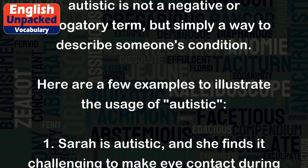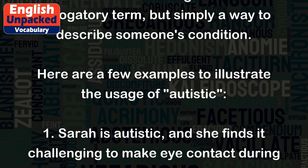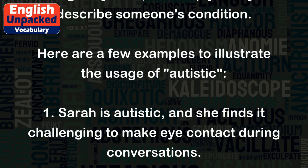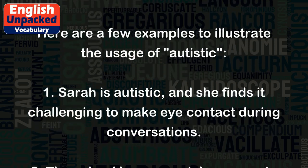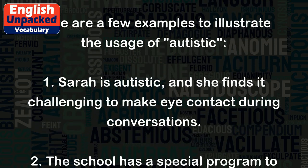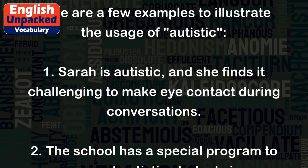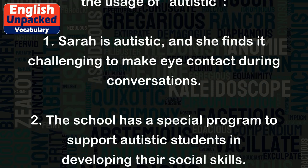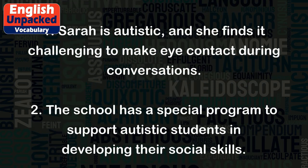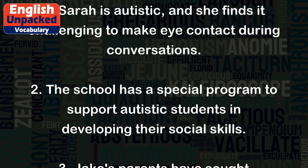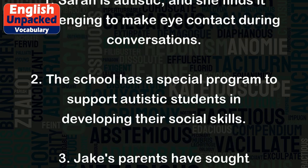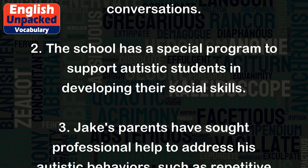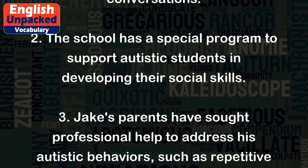Here are a few examples to illustrate the usage of 'autistic.' 1. Sarah is autistic, and she finds it challenging to make eye contact during conversations. 2. The school has a special program to support autistic students in developing their social skills.